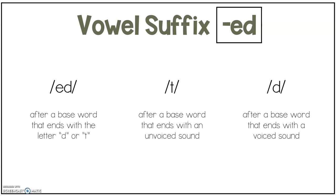Now let's review. We talked about vowel suffix ED today and the three sounds that it can make. It makes the ED sound after a base word that ends with the letter D or T. It makes the T sound after a base word that ends with an unvoiced sound. It makes the D sound after a base word that ends with a voiced sound.